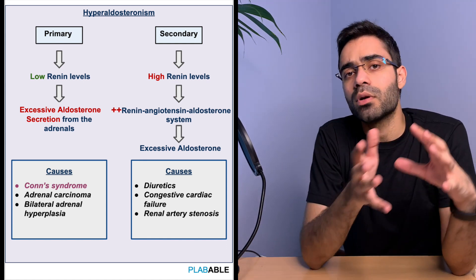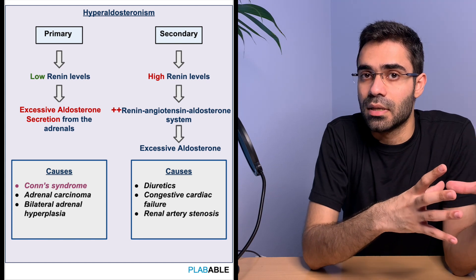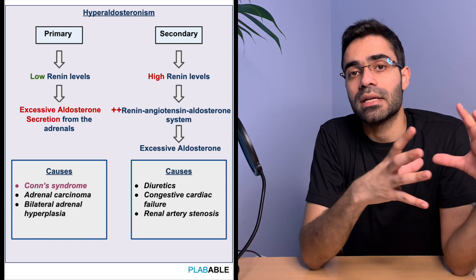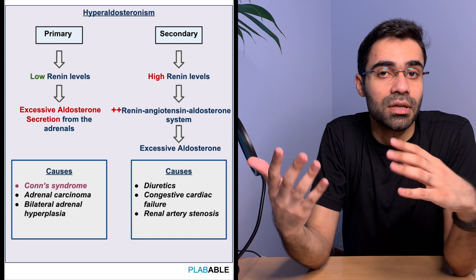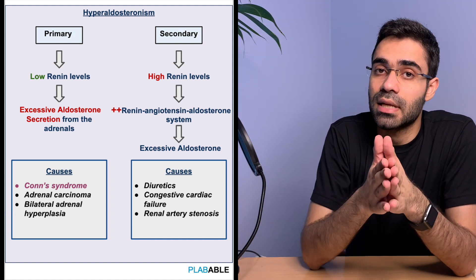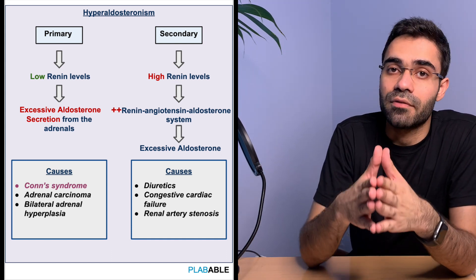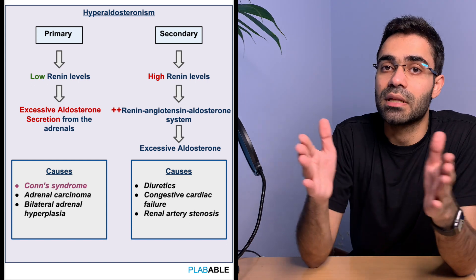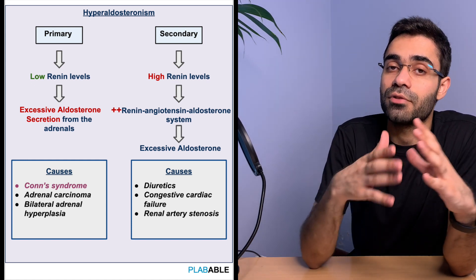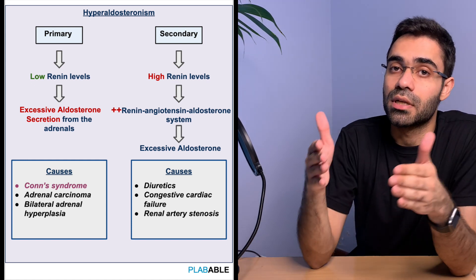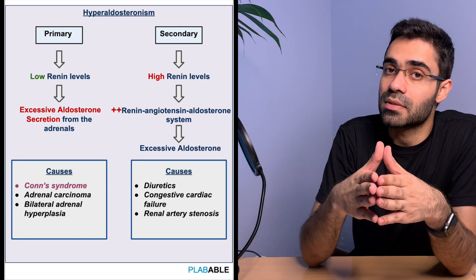Secondary hyperaldosteronism is caused by excessive secretion of renin into the circulation. Drugs like diuretics, or conditions like congestive cardiac failure or renal artery stenosis, can lead to excessive release of renin, which further stimulates the renin-angiotensin-aldosterone mechanism.